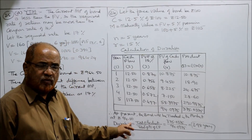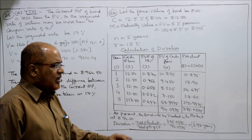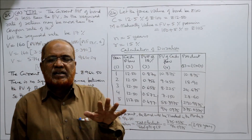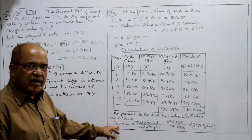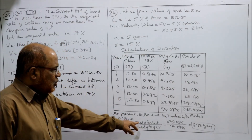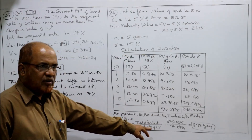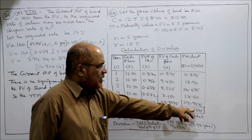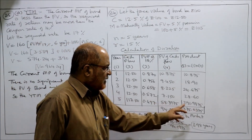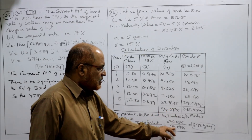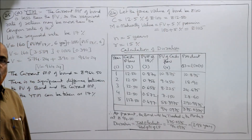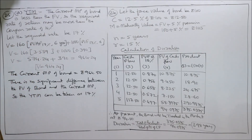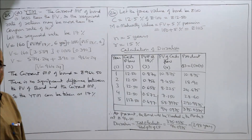So 94.10 is the present value or intrinsic value of the bond. Secondly, to calculate the duration: total product divided by total of PV of cash flow. That is 375.0375 divided by 94.0975, which gives 3.98 as the duration of the bond. Take a pause and copy down this 24th problem.